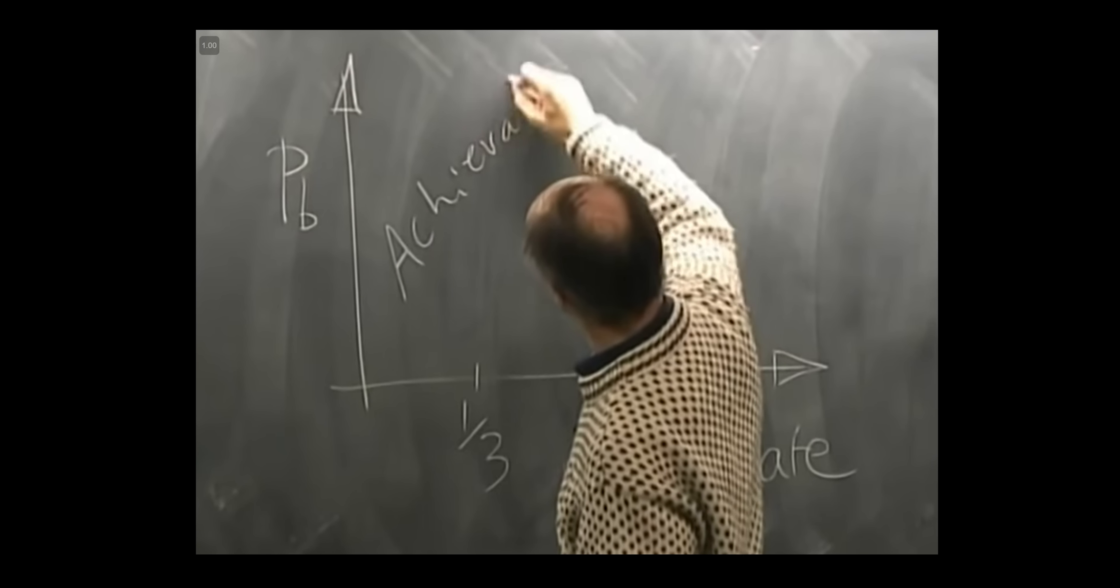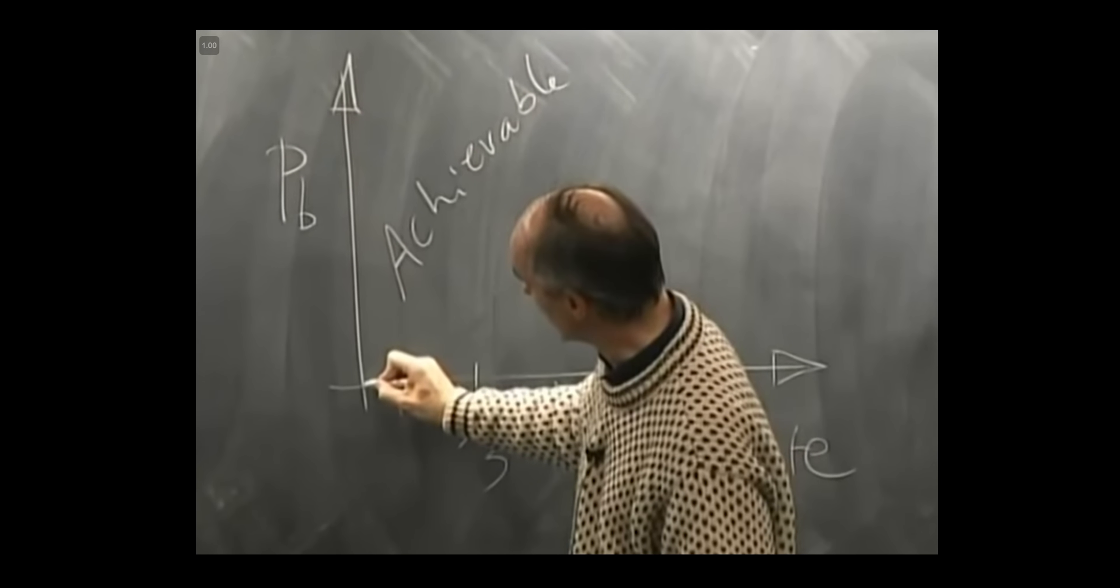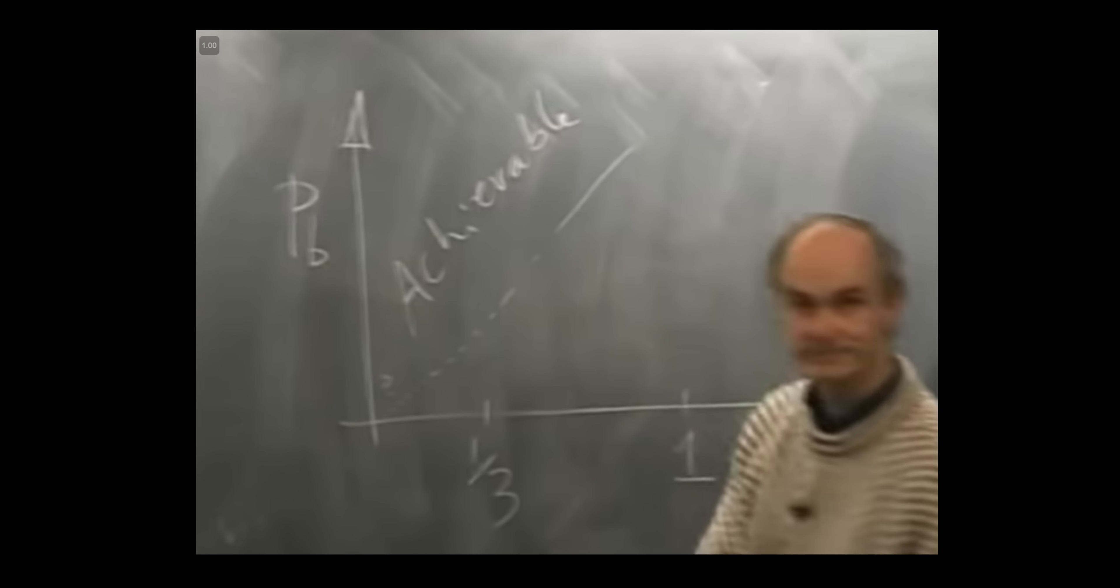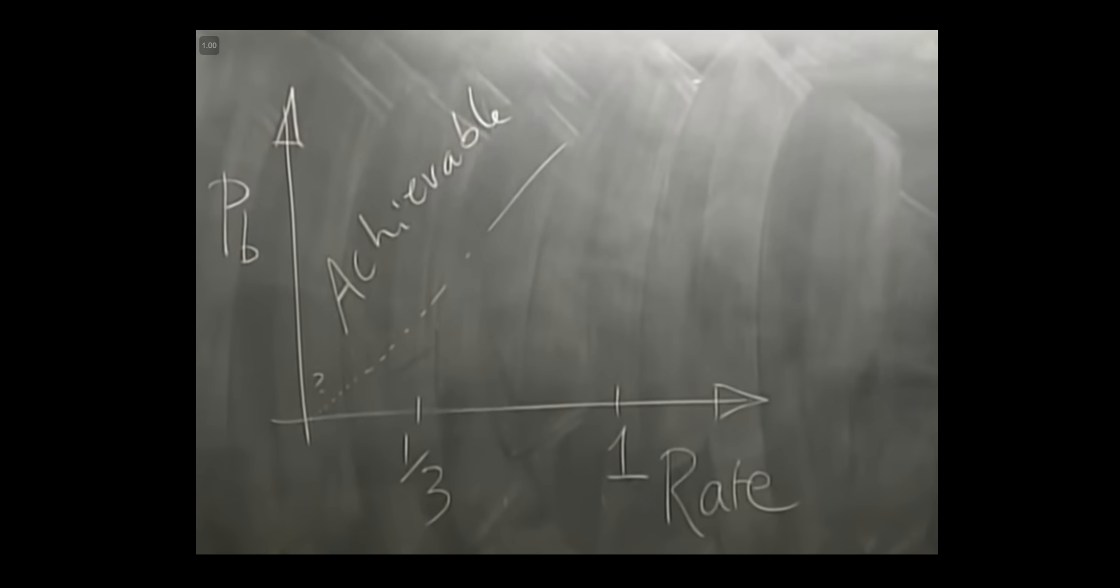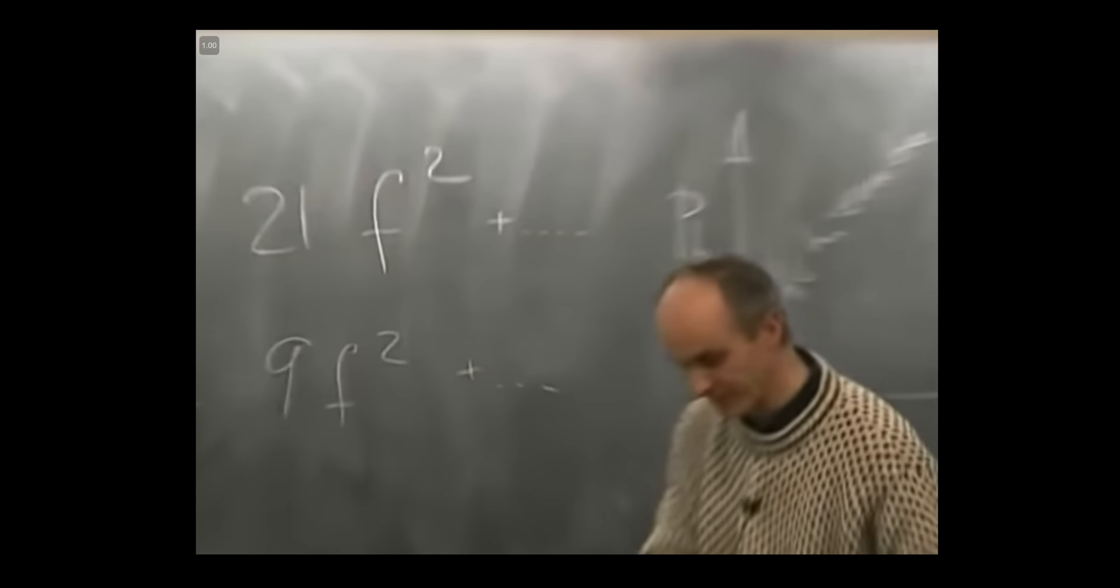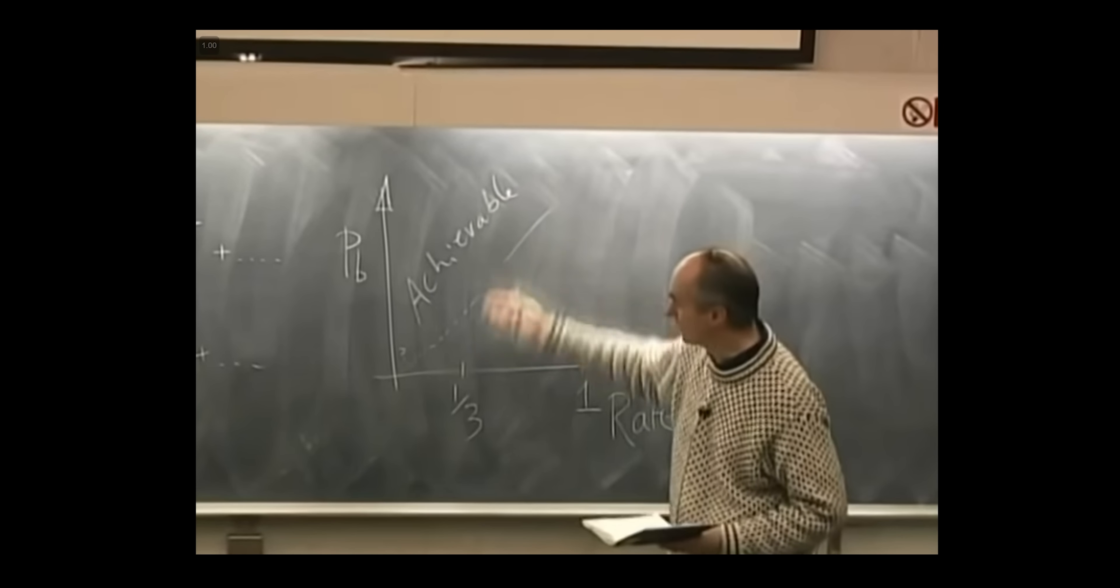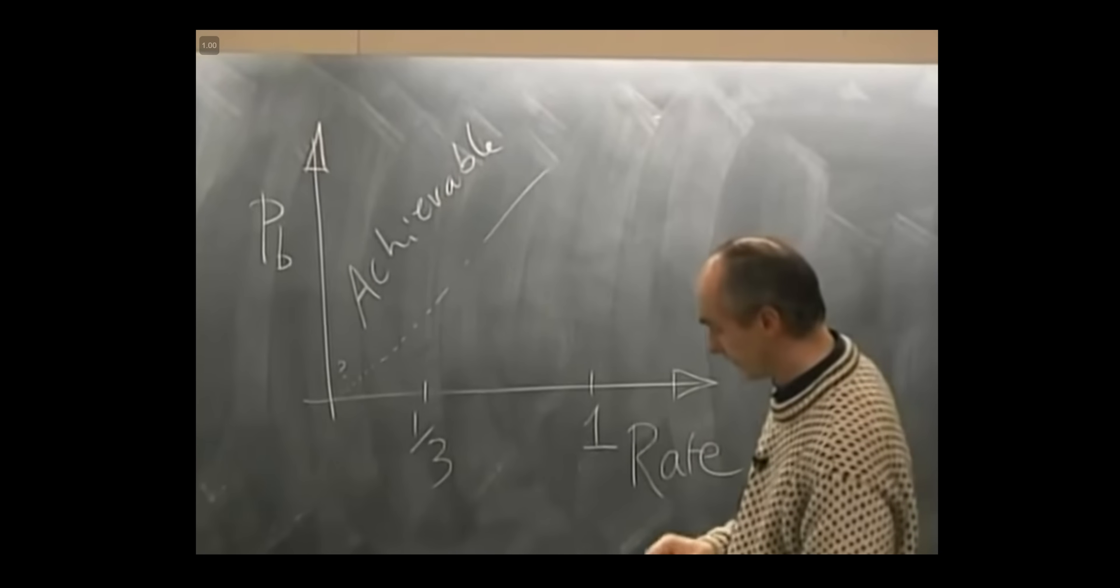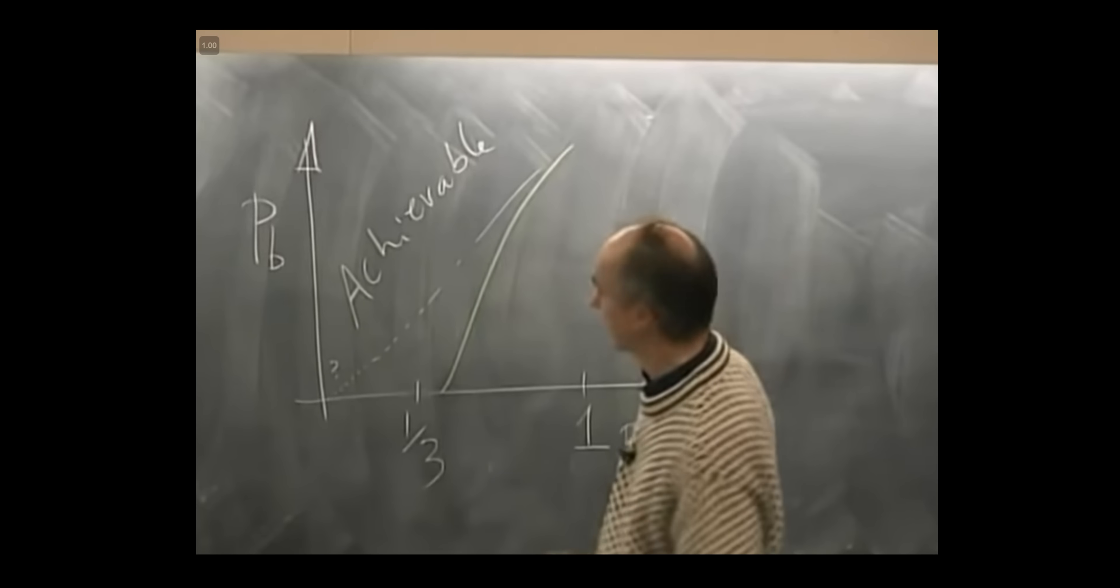Points over here were achievable, but conventional wisdom probably was assuming that the boundary went somewhere here. And Shannon proved an absolutely remarkable result, and this is going to be the heart of this sequence of lectures to prove this result. Shannon proved that you can get the error probability arbitrarily small without the rate having to go to zero. So Shannon proved that the boundary between achievable and non-achievable points is a line that looks like this.